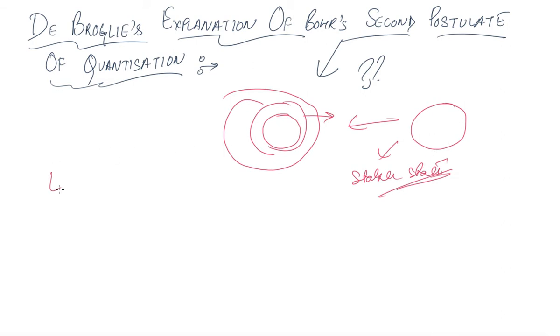Mathematically, the angular momentum was given as nh/2π. But the question is, why should a particle rotate in this particular orbit?